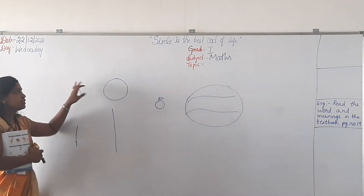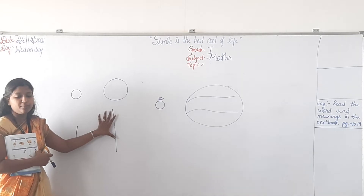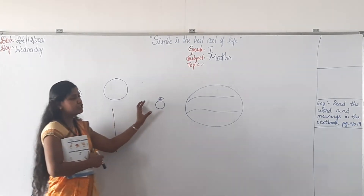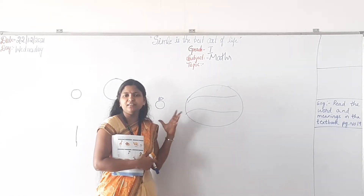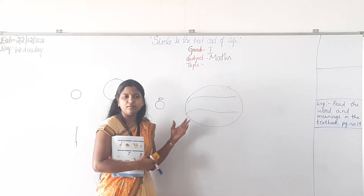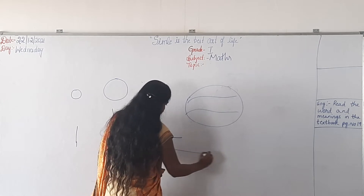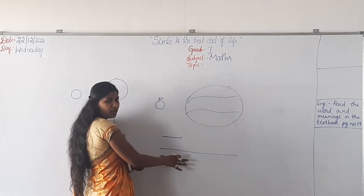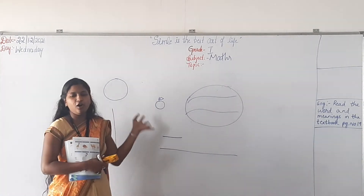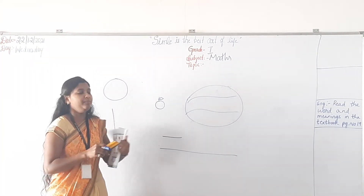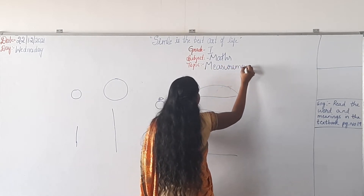So everything — can you see? This is a small circle. Big circle. Long line. Short line. Long line. We are measuring the things here. This is a short line. This is a long line. So that means we are measuring all the things. So the chapter name is measurements. What is the chapter name? Measurements.